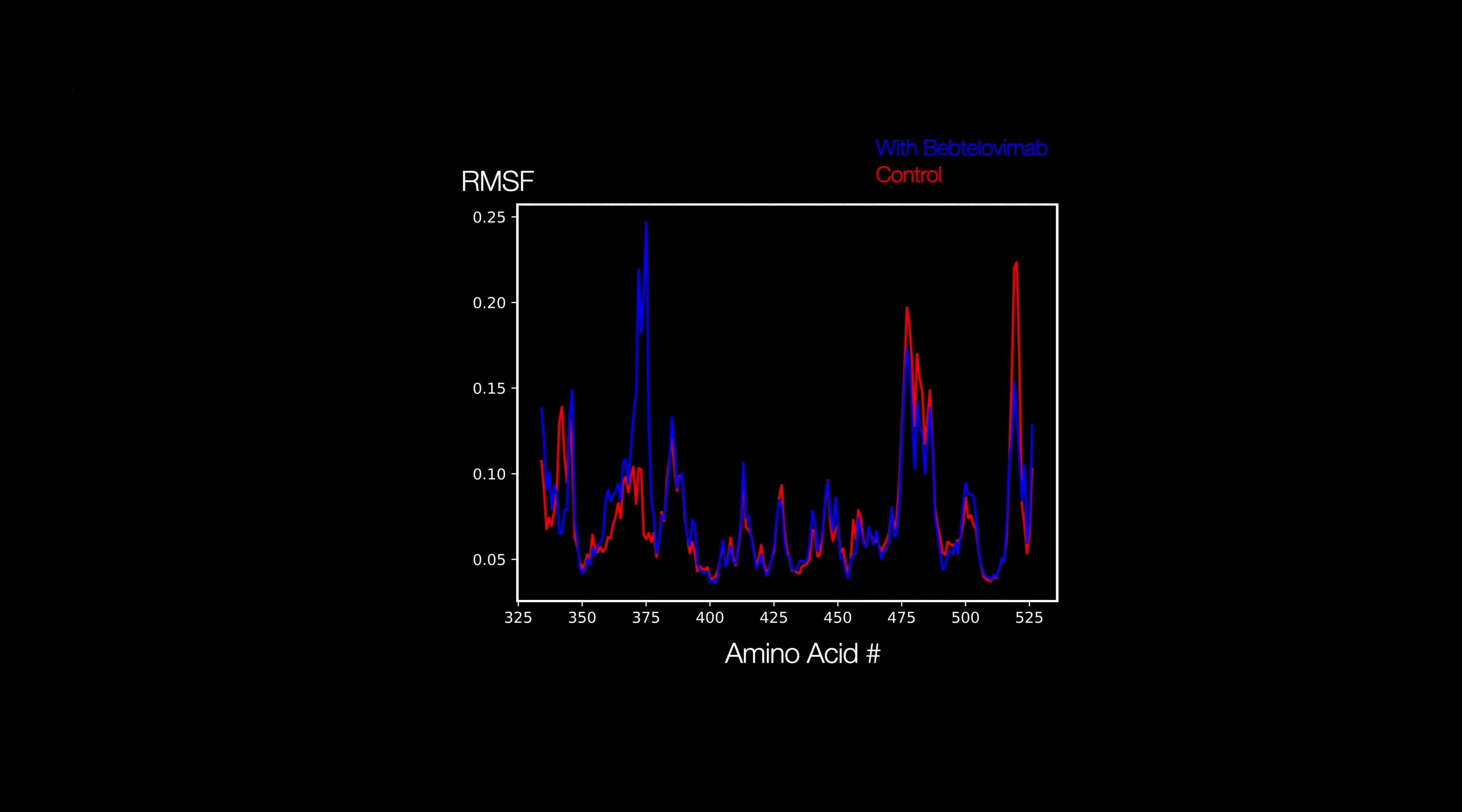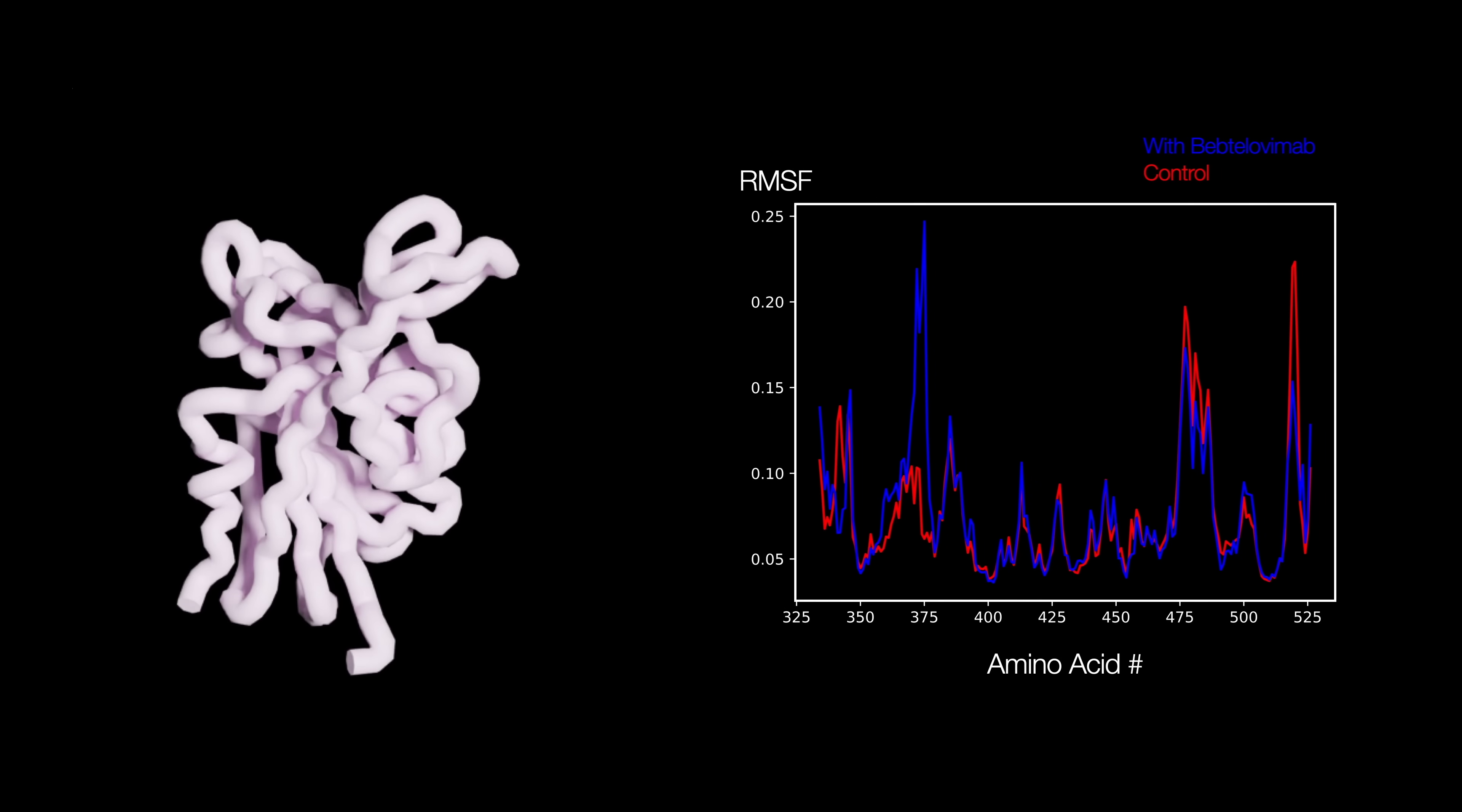Looking at the results, the amino acids in the left shoulder region shake less often, while the right flank region shakes much more often. This left shoulder is very important since it's a part of the key. That's our first clue as to what the drug actually does. The motion of the left shoulder is restricted by the drug.